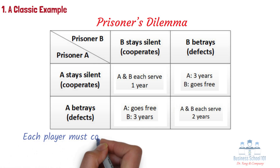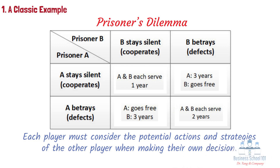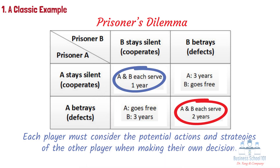In this scenario, each player must consider the potential actions and strategies of the other player when making their own decision. If Alice believes that Bob will confess, then her optimal strategy is to confess as well, since she will receive a shorter sentence by doing so. Similarly, if Bob believes that Alice will confess, then his optimal strategy is to confess as well. The optimal outcome for both players is to remain silent, which results in a combined sentence of two years. However, if both players act in their own self-interest and confess, they will both receive a sentence of two years. This example illustrates the essence of game theory: to analyze the strategic interactions between decision-makers to identify the optimal outcomes and strategies.